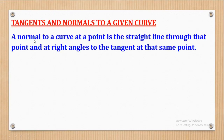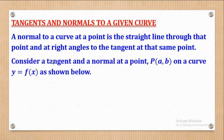A normal to a curve at a point is the straight line through that point and at right angles to the tangent at the same point. Consider a tangent and a normal at a point P, AB on a curve Y equal to F(X) as shown below.